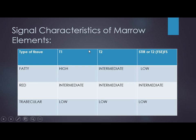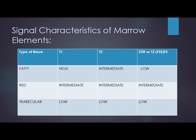The signal characteristics of red and fatty marrow: the most important MRI sequence for bone marrow examination is T1. Fatty marrow has high signal intensity on T1, intermediate on T2, and because it is predominantly fat, it will suppress and become low on fat suppression. Red marrow is intermediate on all sequences — intermediate on T1 and T2 — and because it contains less fat, it remains the same on fat suppression. Bone trabeculae appear as a low-signal framework against the background of fatty and red marrow.